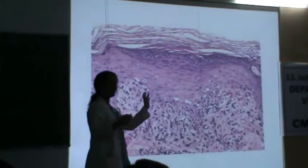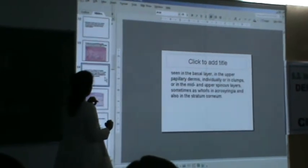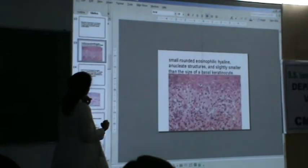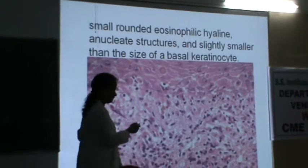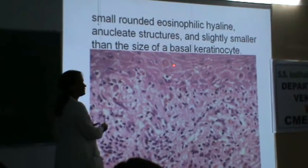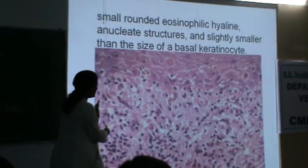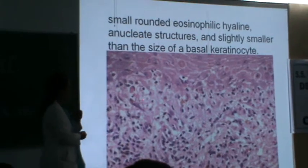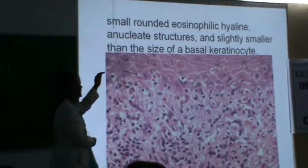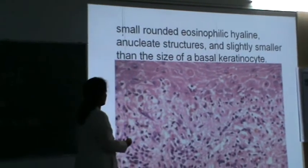Can you appreciate the keratinocytes which are necrotic — the colloid bodies, the civatte bodies? Where are they present? Most often we see them in the basal layer, and we do see them in the papillary dermis too. Sometimes they could be seen up to the keratin layer. So civatte bodies and colloid bodies are part of the picture, though we do see them in many other conditions as well.